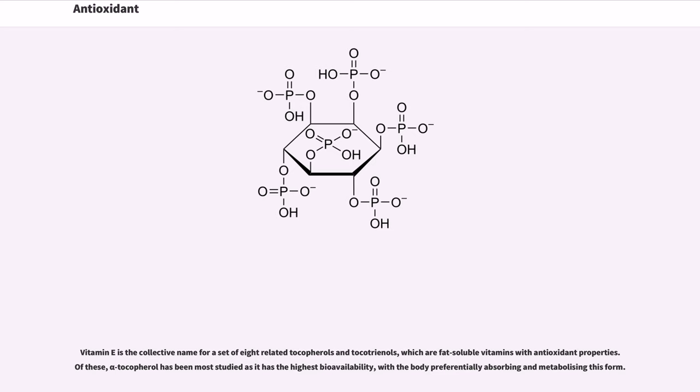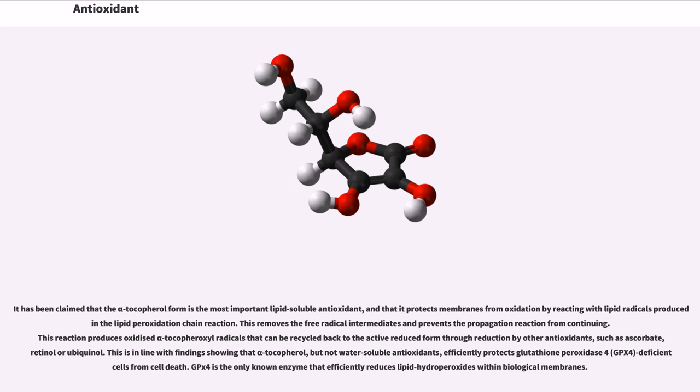Vitamin E is the collective name for a set of eight related tocopherols and tocotrienols, which are fat-soluble vitamins with antioxidant properties. Of these, alpha-tocopherol has been most studied as it has the highest bioavailability, with the body preferentially absorbing and metabolizing this form. It has been claimed that the alpha-tocopherol form is the most important lipid-soluble antioxidant, and that it protects membranes from oxidation by reacting with lipid radicals produced in the lipid peroxidation chain reaction. This removes the free radical intermediates and prevents the propagation reaction from continuing.